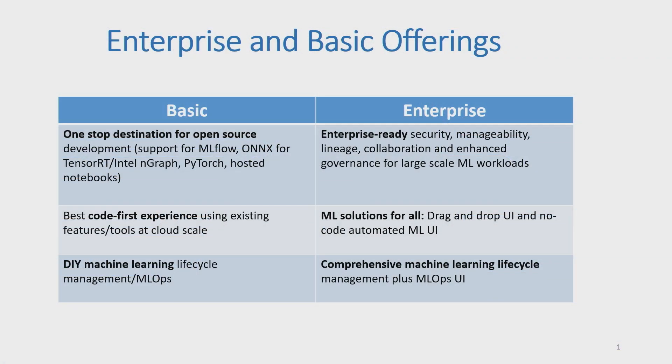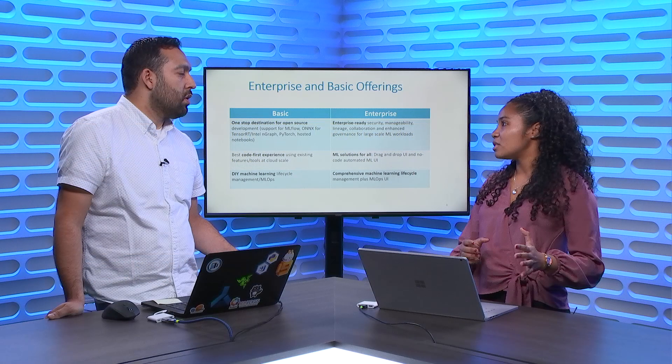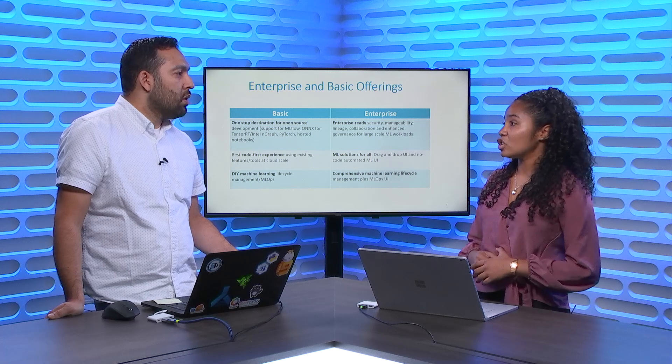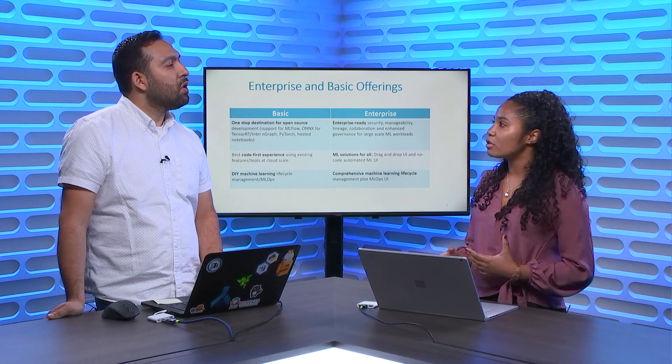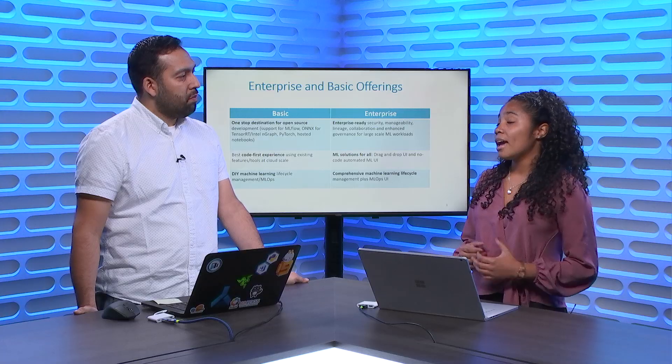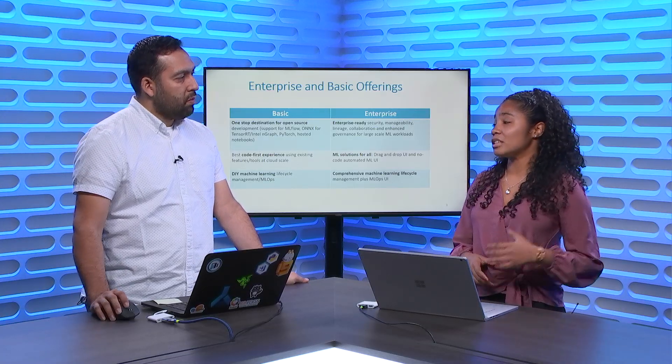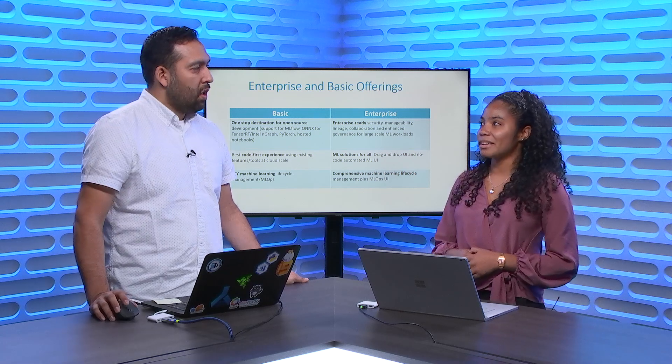On the other hand, we have the Enterprise SKU, and in this SKU we have some added capabilities. For instance, we have enhanced security, collaboration, manageability, and governance. Enterprises can actually control their resources — they can do capacity sharing and quota management. Also in this SKU there's machine learning for all. We have some really cool new UI capabilities like a self-serving UI and drag-and-drop UI. And we've improved our MLOps capability to streamline the machine learning life cycle.